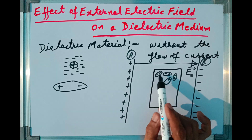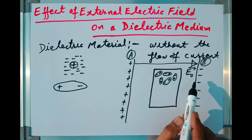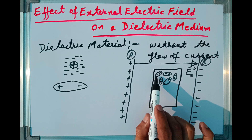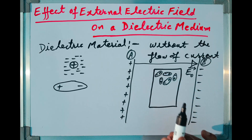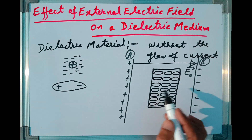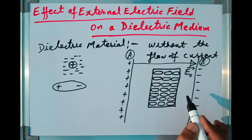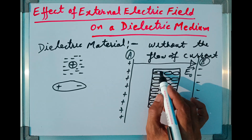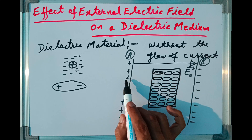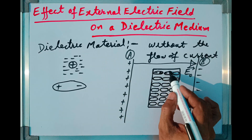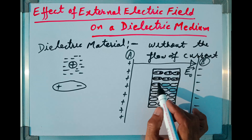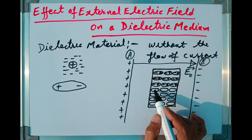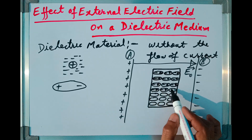What will happen? Each of these molecules will be reoriented due to this positive plate and negative plate. The negative pole of each molecule will be attracted towards the positive plate, and the positive pole will be attracted towards the negative plate. Each molecule will be reoriented. Each molecule in the slab will be reoriented in such a way that its negative pole gets oriented towards the positive plate and its positive pole towards the negative plate. This will happen to each and every molecule.